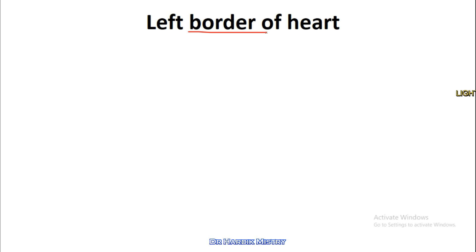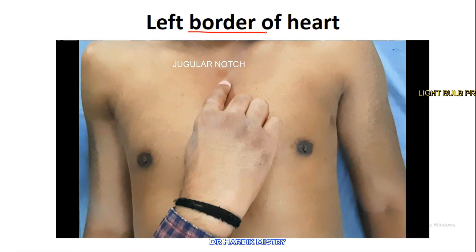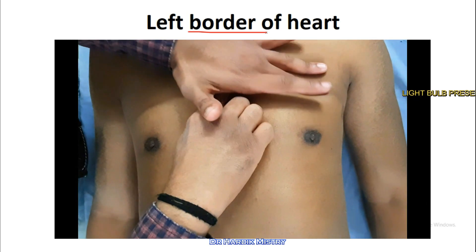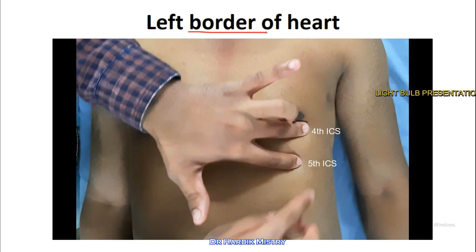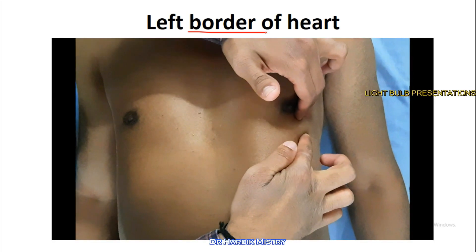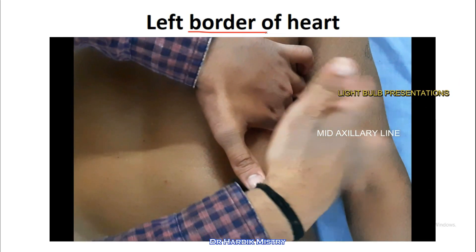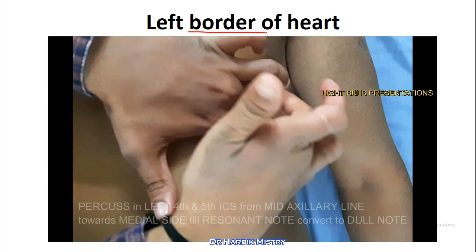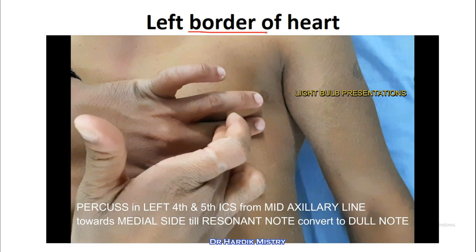For the left border of the heart, first identify the second intercostal space on the left side, then find the fourth and fifth intercostal space on the left side. Move your finger in the fourth and fifth intercostal space till the mid-axillary line on the left side. Start your percussion from the mid-axillary line in the left fourth and fifth intercostal space, where you will find the resonant note.